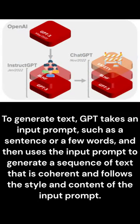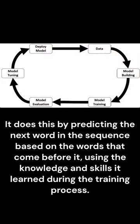To generate text, GPT takes an input prompt, such as a sentence or a few words, and then uses the input prompt to generate a sequence of text that is coherent and follows the style and content of the input prompt. It does this by predicting the next word in the sequence based on the words that come before it, using the knowledge and skills it learned during the training process.